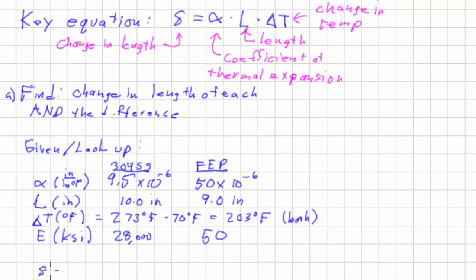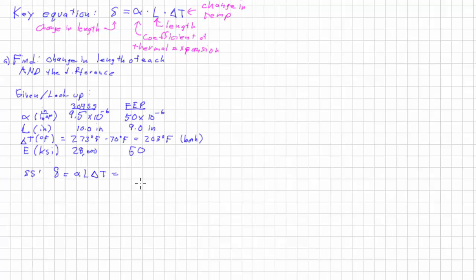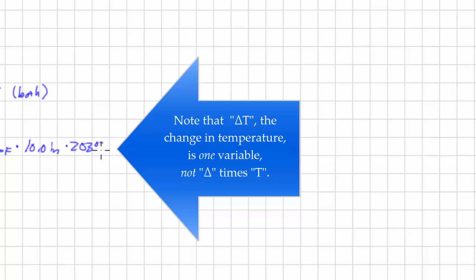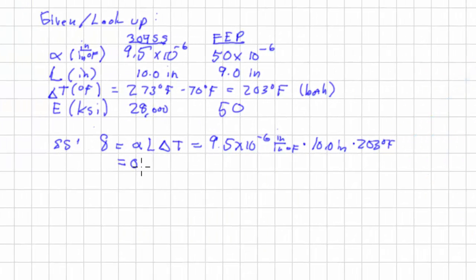Okay, so for the stainless steel, our deflection is equal to alpha L delta T, and that is 9.5 times 10 to the negative 6th inches per inch degree Fahrenheit times 10.0 inches times 203 degrees Fahrenheit, which equals 0.019 inches. Now that doesn't seem like a lot, but when you're trying to keep tolerances within maybe just a few thousandths or maybe a hundredth of an inch, that can make a big difference depending on how the parts go together.